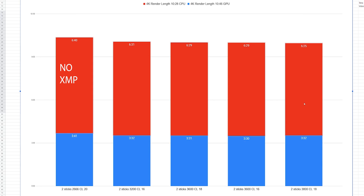In both videos we were getting approximately the same type of numbers. With the GPU-intensive timeline, it was pretty much the same and it really didn't affect anything at 3800 CL18. But we do have these different numbers coming into play, and some people have been asking: what if I can get the 3600 down to CL16? What is the difference there when we're looking at these two and the latency?